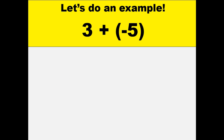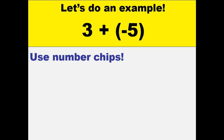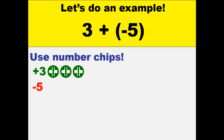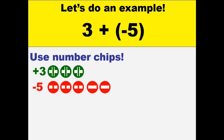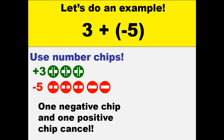Another example: 3 plus negative 5. Thinking of the number chips, we have positive 3 — that is 3 positive chips — and negative 5, that is 5 negative chips. Cancelling 1 positive and 1 negative, we have 3 chips that cancel each other, giving us 2 negative chips. Our final answer would be negative 2.